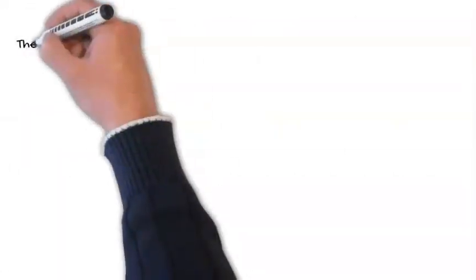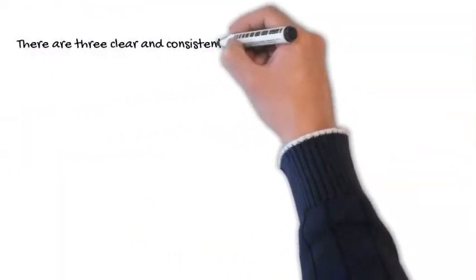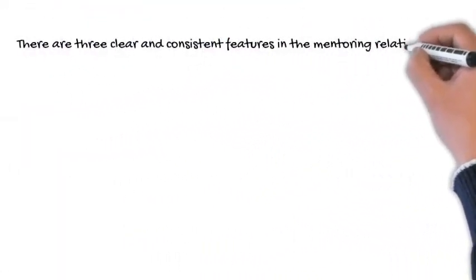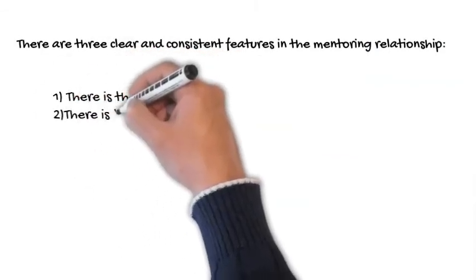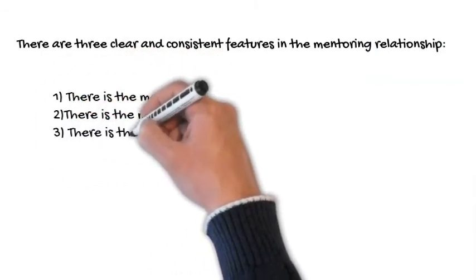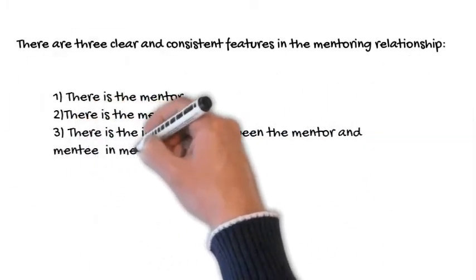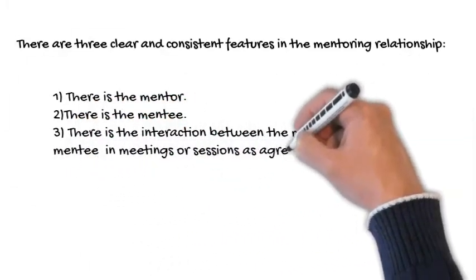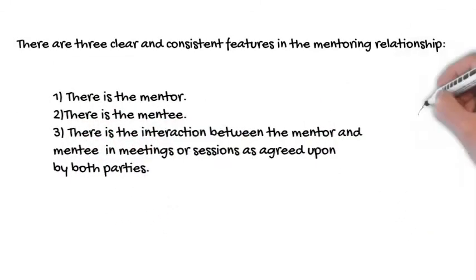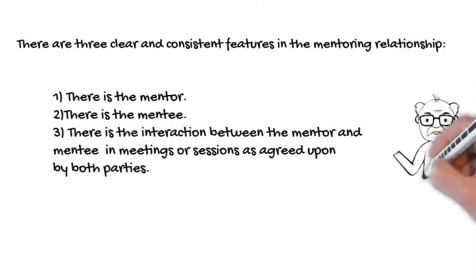There are three clear and consistent features in the mentoring relationship. First, there is the mentor. Secondly, there is the mentee. And third, there is the interaction between the mentor and mentee in meetings or sessions as agreed upon by both parties.